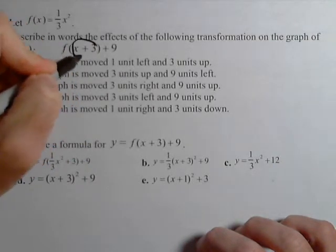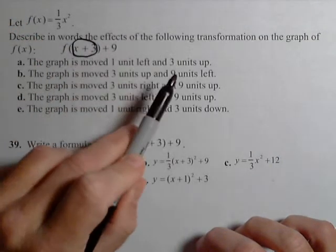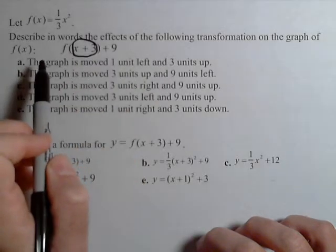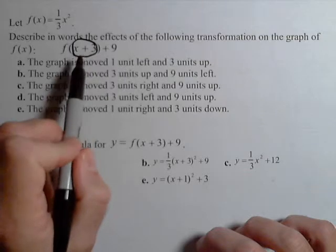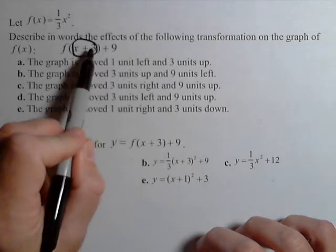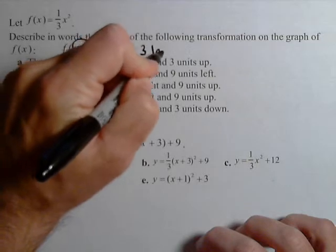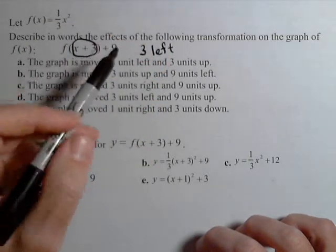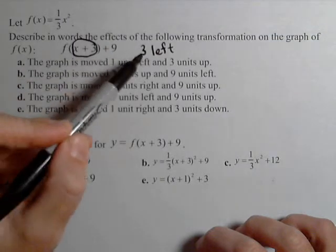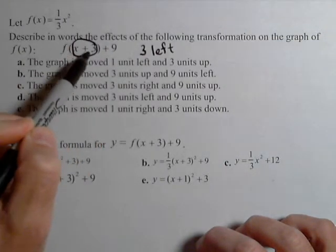Let's start with the x plus three. When it's inside the parentheses, it's always gonna be a horizontal movement. It's always gonna be opposite of what you expect. So what's gonna happen is it's gonna move three units, and it's gonna go three left, because normally we'd think plus would be right. So x plus three is gonna shift the graph three to the left.